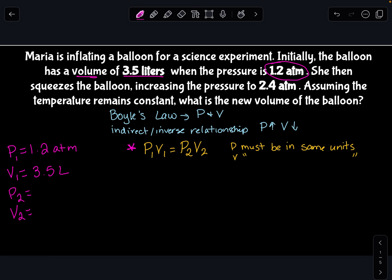She squeezes the balloon, increasing the pressure to 2.4 ATM. Assuming that the temperature remains constant, what is the new volume? So I don't know what V2 is, so I'm going to put a question mark there. I'm also going to call it x. So I can just change that and put x, because that's my unknown.